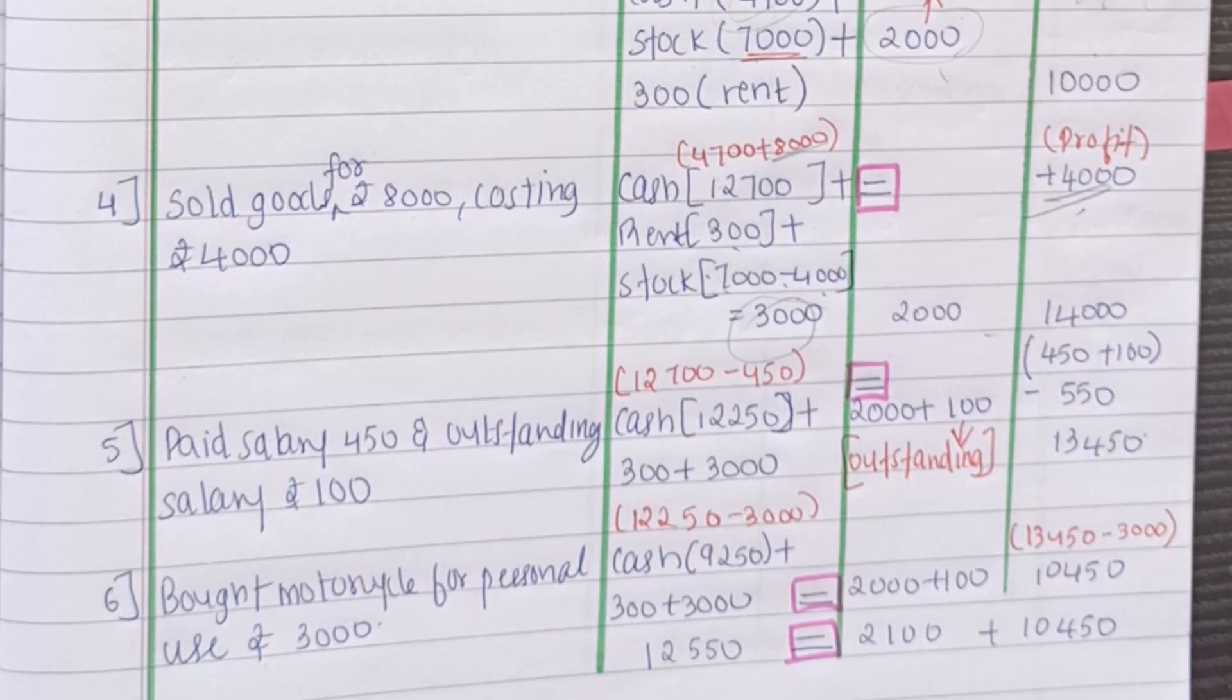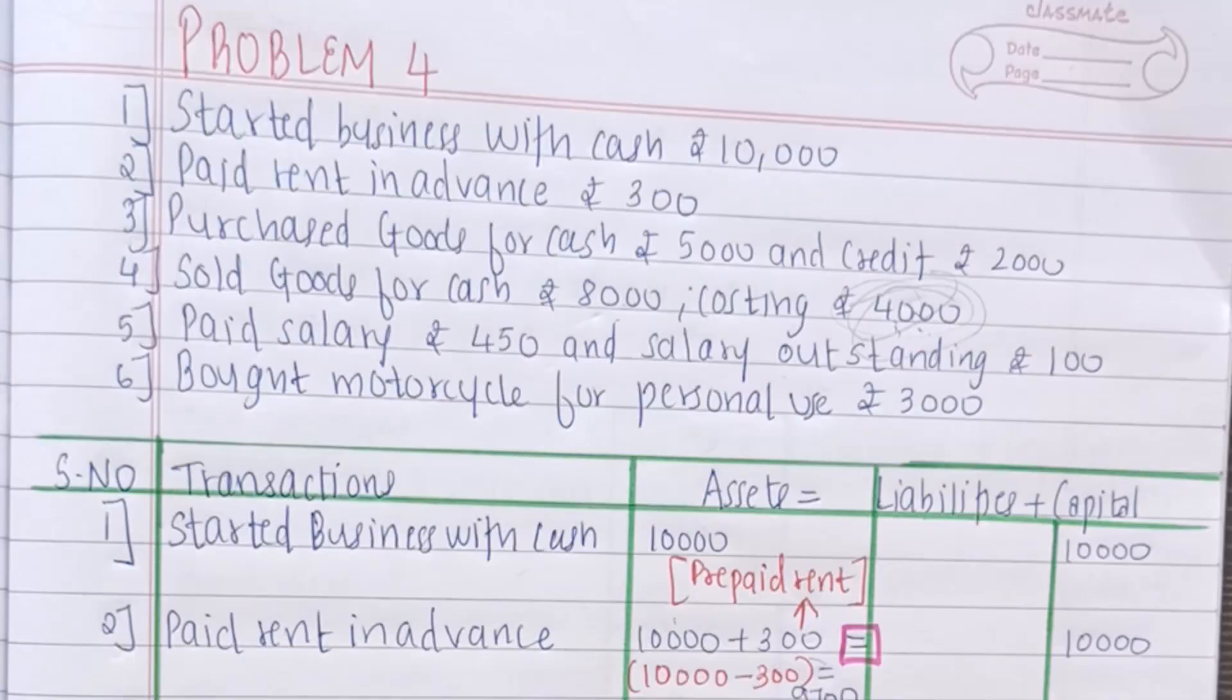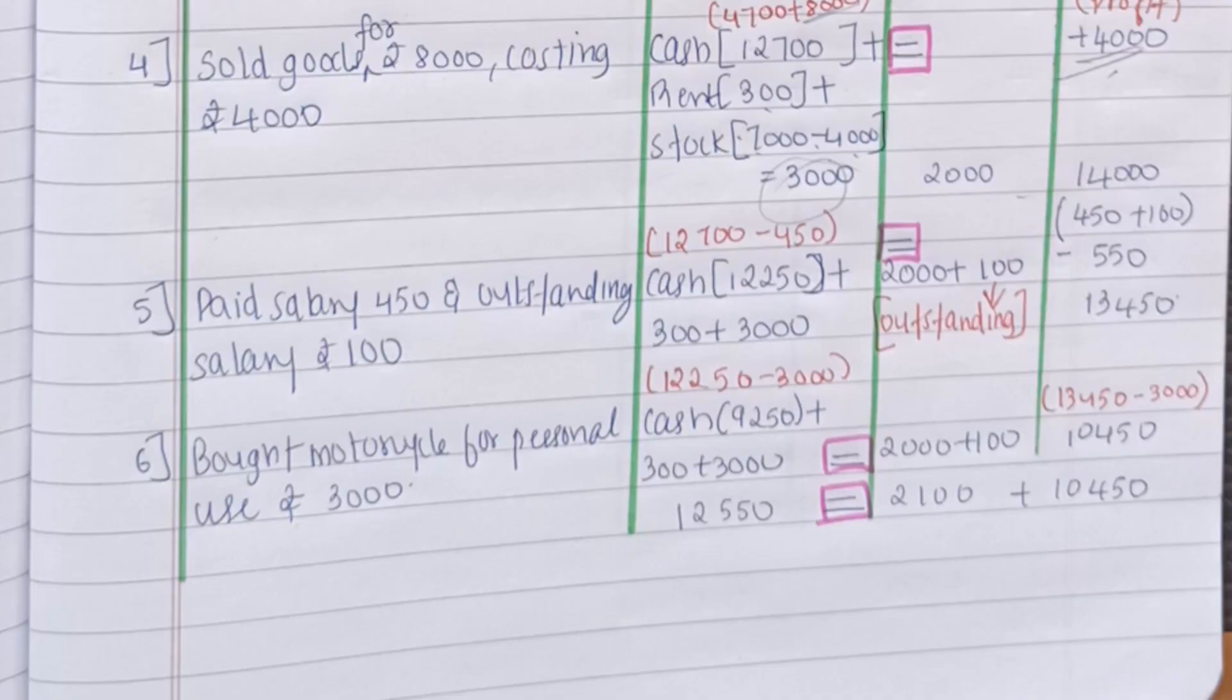So this becomes Rs.14000. So let us start with our fifth transaction. That is paid salary Rs.450 and salary outstanding Rs.100. So here we have to understand that salary paid is something that we have already paid. And outstanding salary means that the salary that we have to pay. But we have not yet paid. So this will have the effect at three places.